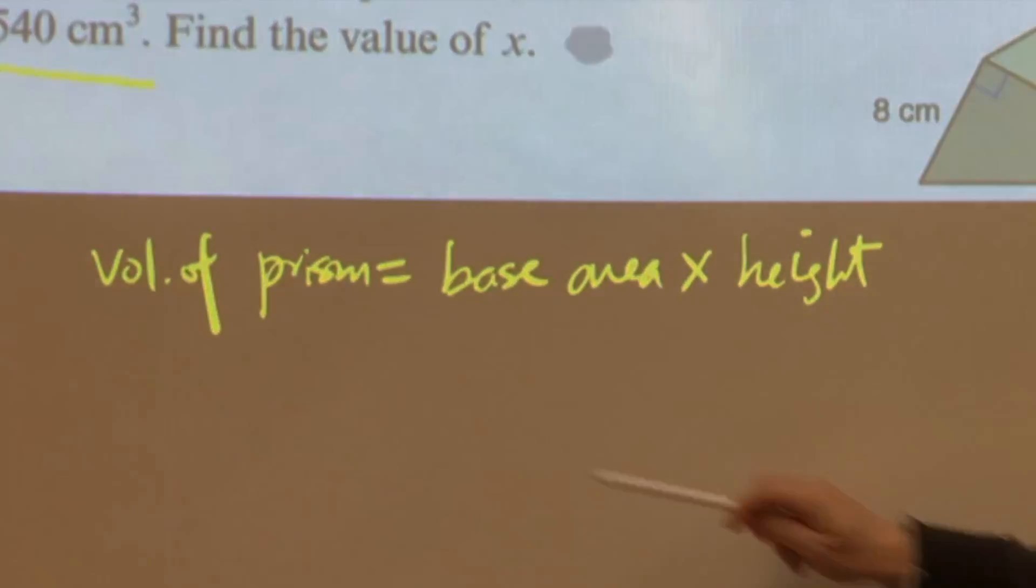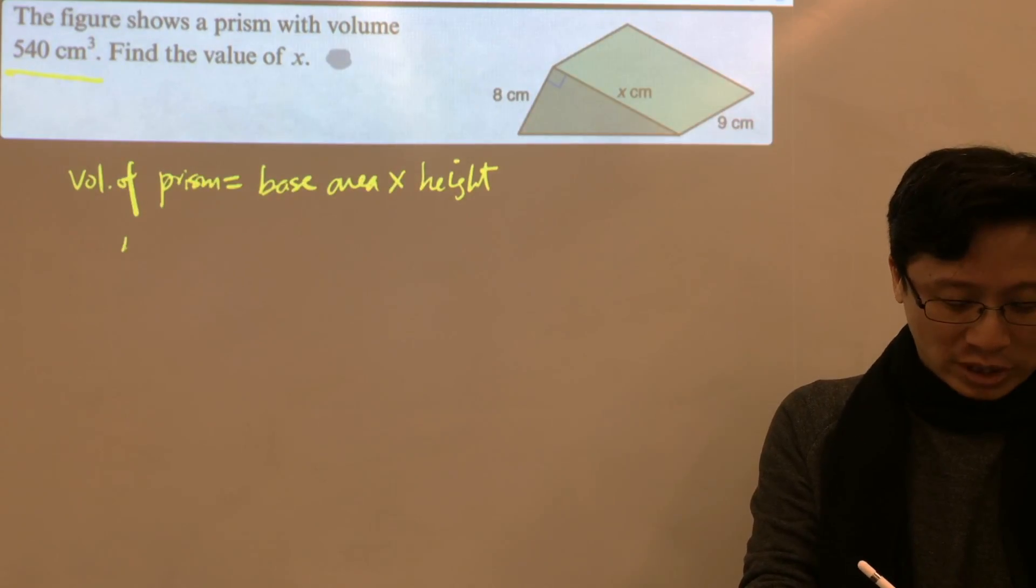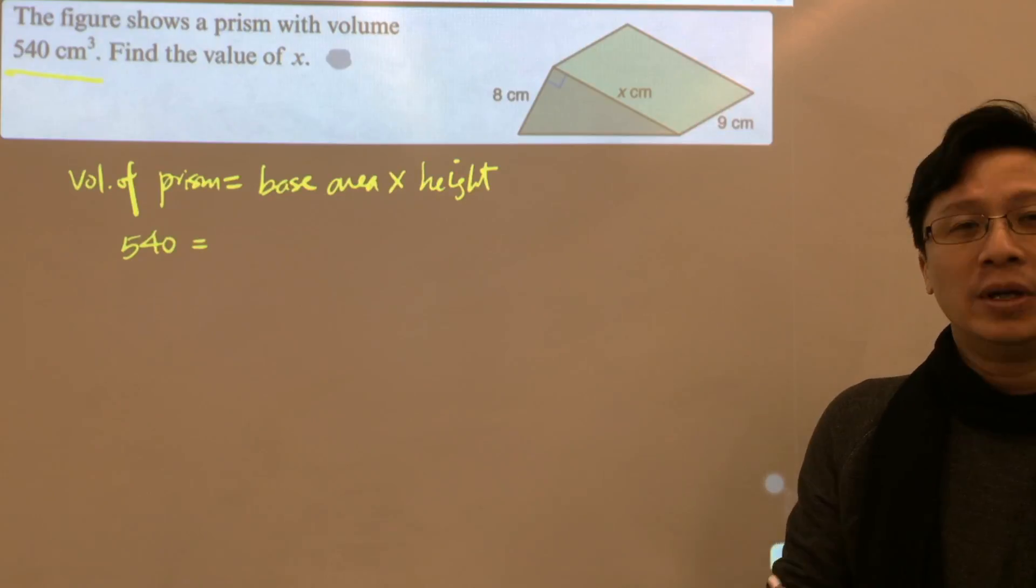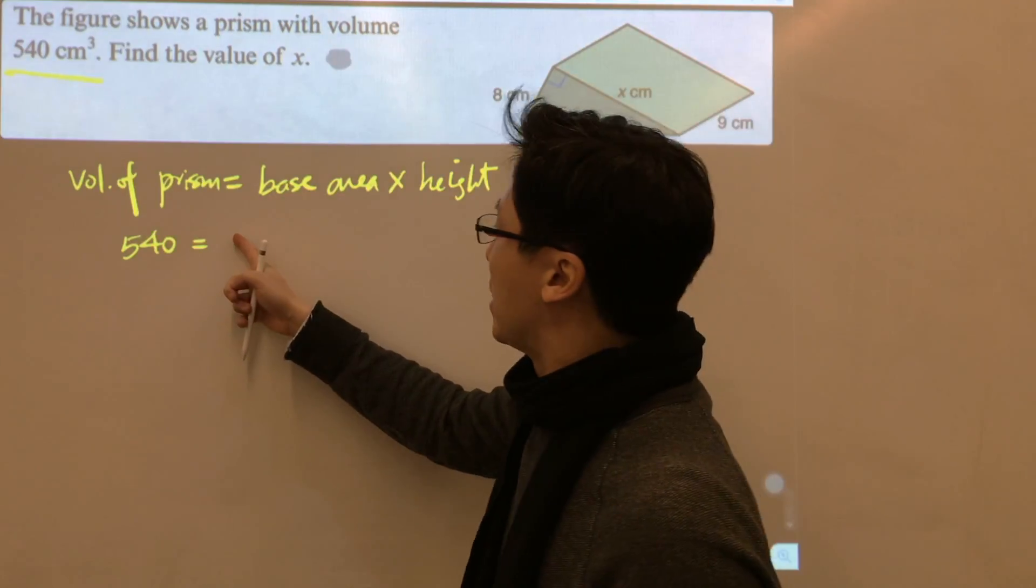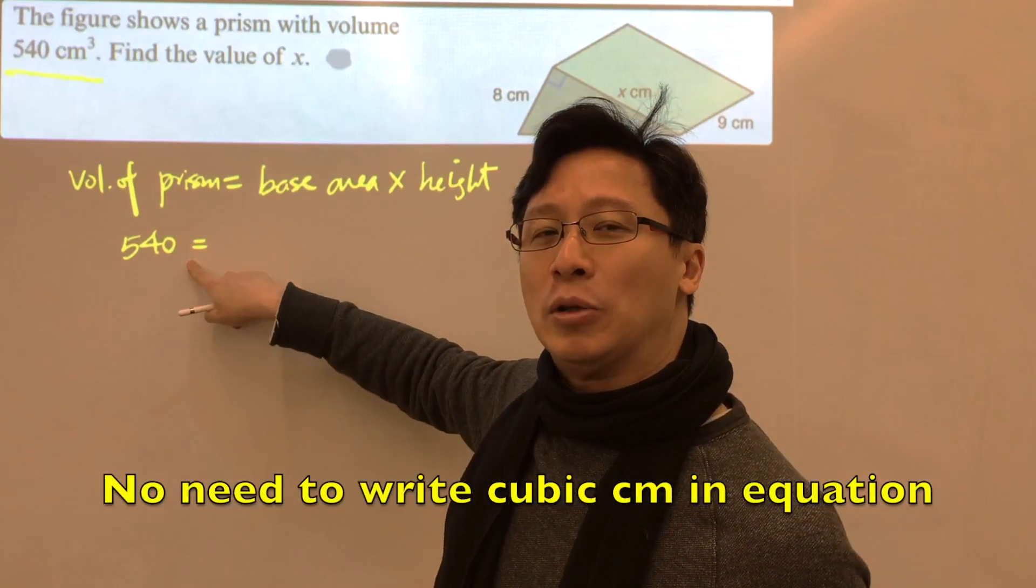height. So, given volume is 540 cm³, we can now set up an equation to solve for x. Note that we don't need to write down the